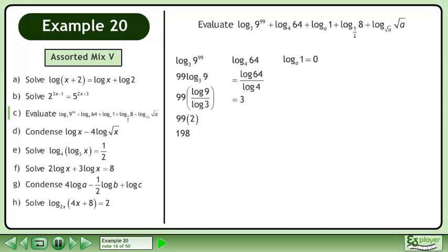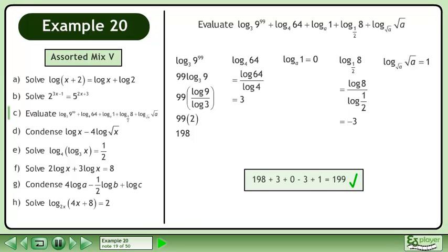The base A logarithm of 1 equals 0. The base 1/2 logarithm of 8 equals -3. The base √A logarithm of √A equals 1. Add each result to get 199.